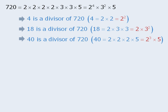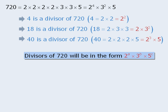Now here comes a very important observation. Since the prime factorization of 720 consists solely of 2's, 3's, and 5's, the divisors of 720 must be in the form 2 to the power of a times 3 to the power of b times 5 to the power of c.